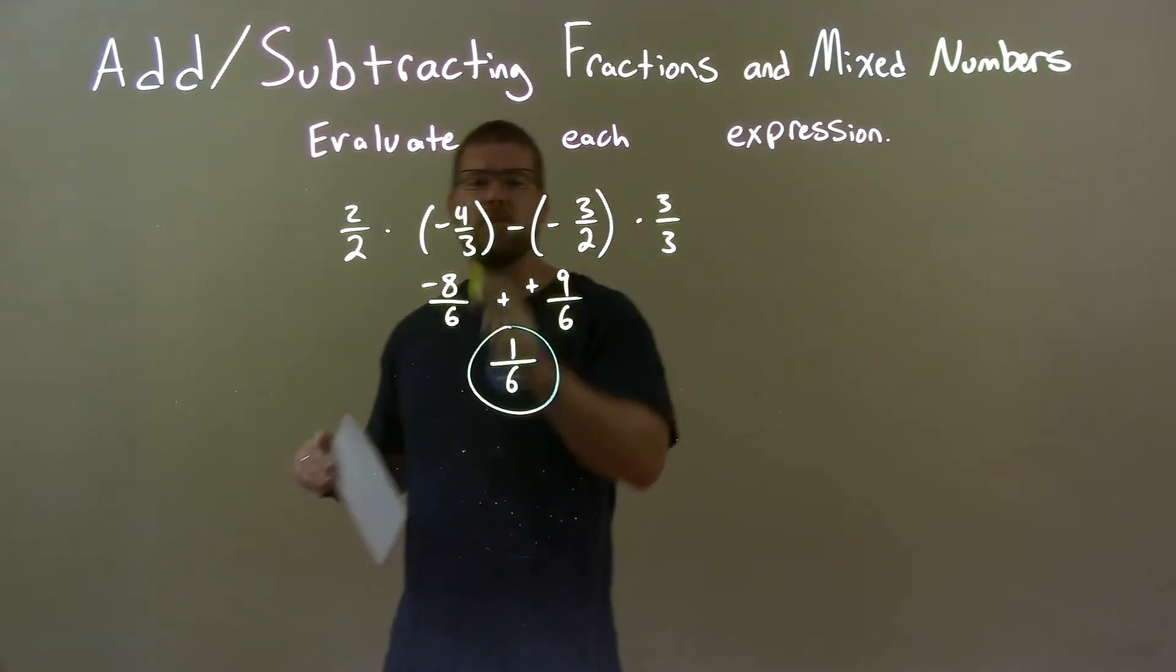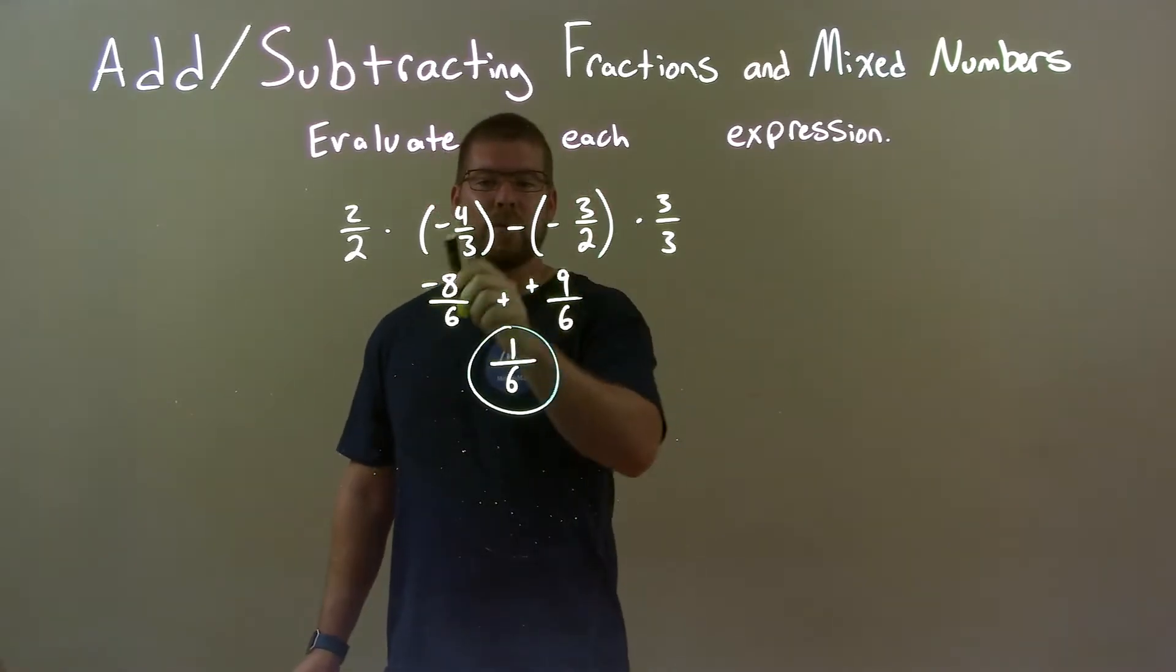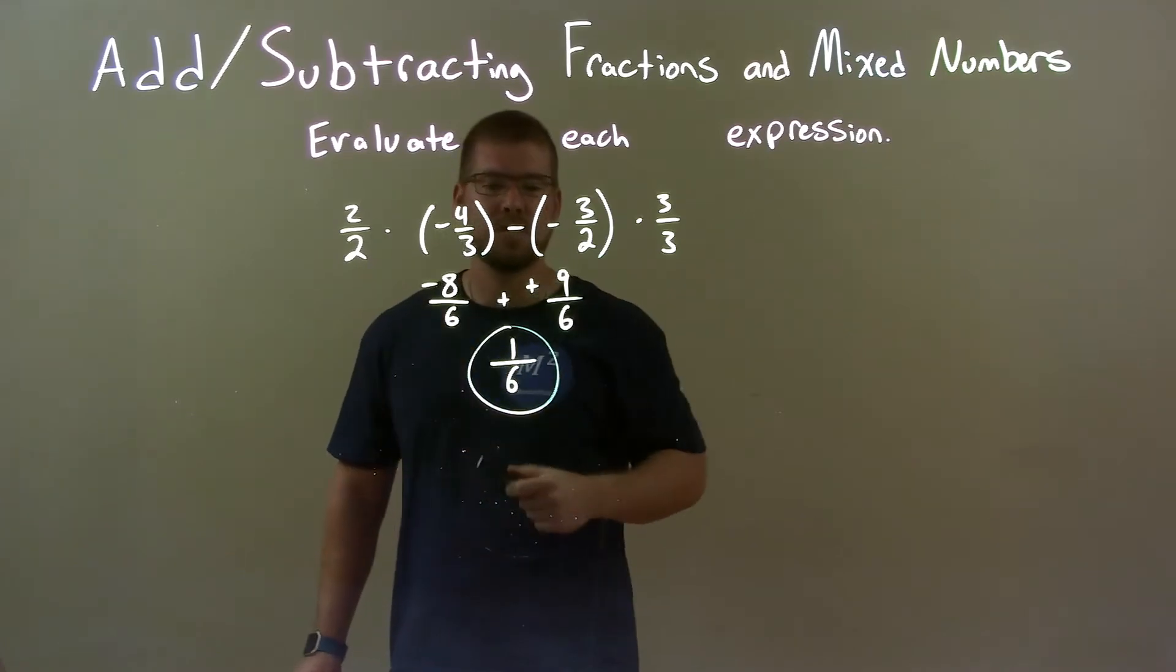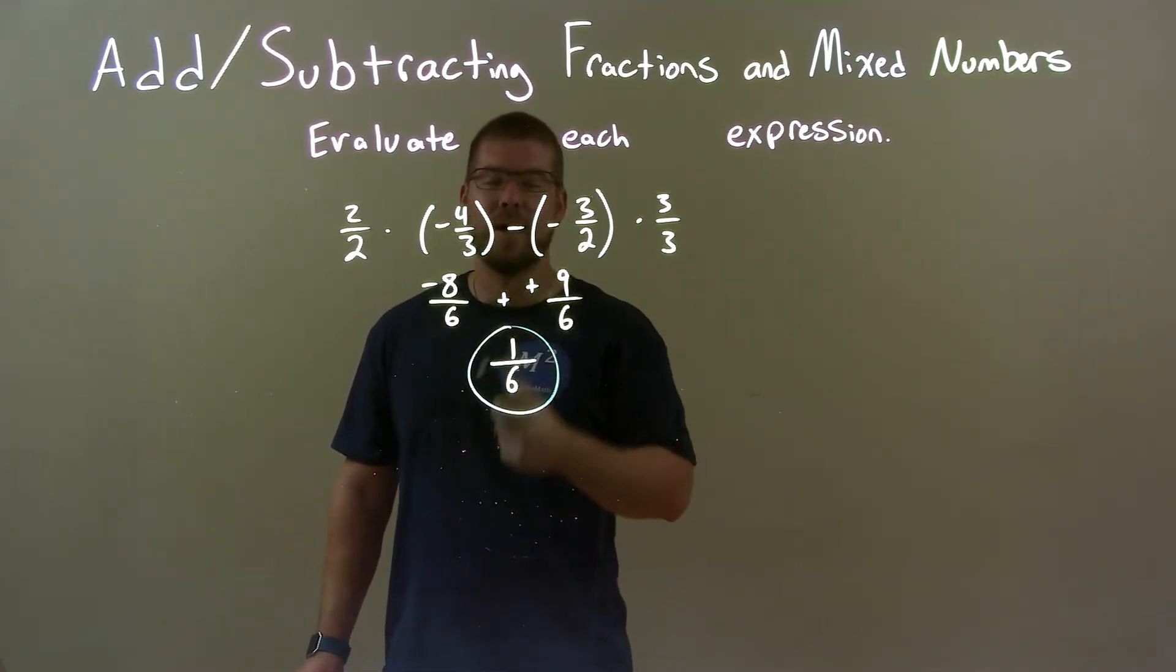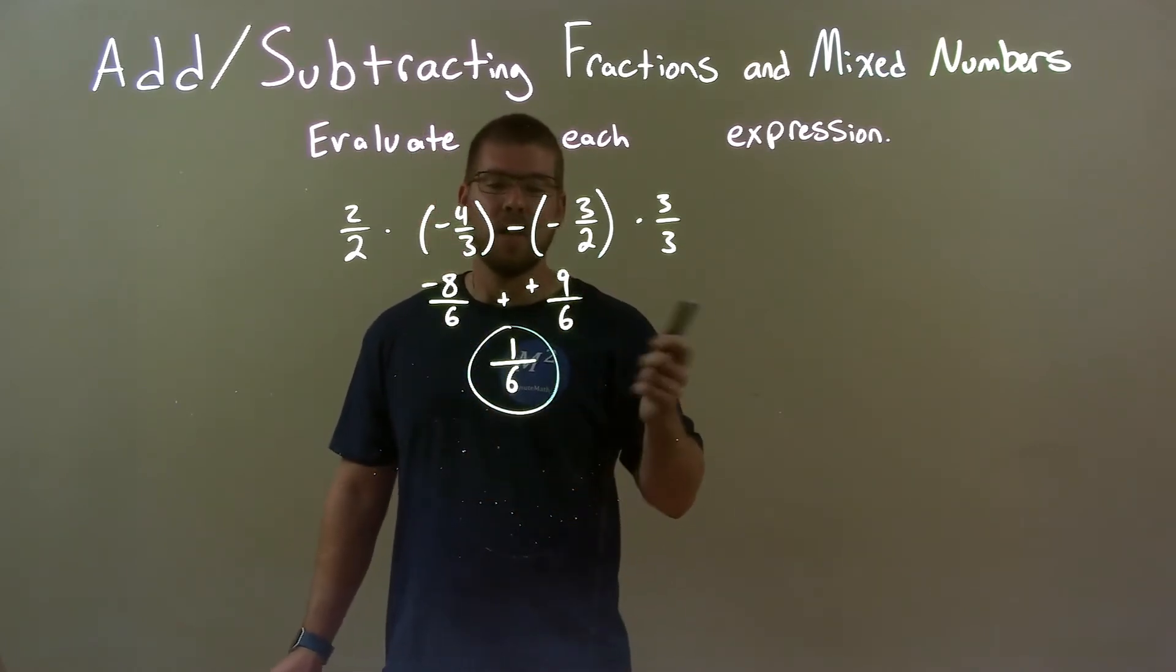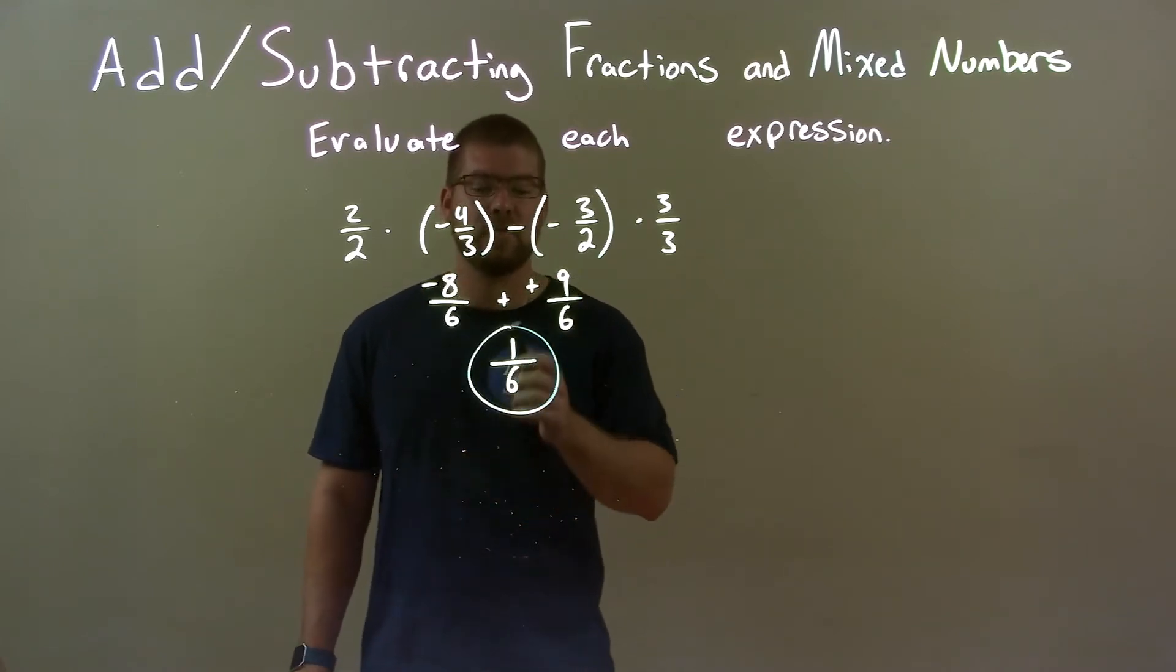So, quick recap. We're given negative four thirds minus a negative three halves. Well, I got a common denominator here by multiplying the second number by three over three and the first number by two over two. I also subtracted a negative to make it plus a positive. We got negative eight over six plus positive nine over six. So, then I just added the numerator there. And so, our final answer again is just one sixth.